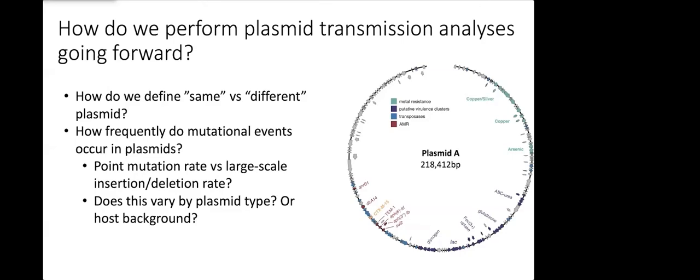On top of that, in plasmids we don't just have to worry about point mutations, we also have to worry about larger scale insertion and deletion events, especially in these AMR regions. How often do these larger scale insertion deletion inversion events actually occur? I have a sneaking suspicion that this is probably going to vary a little bit by plasmid type and also potentially by host background.